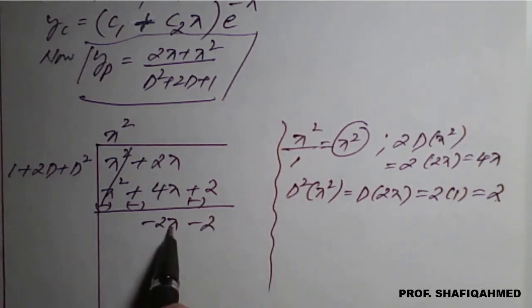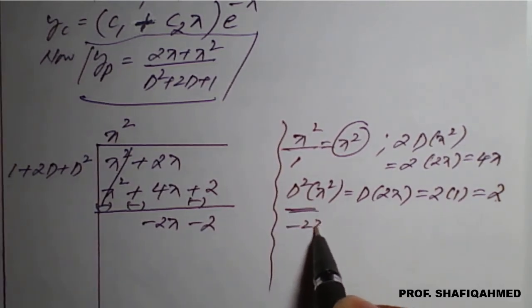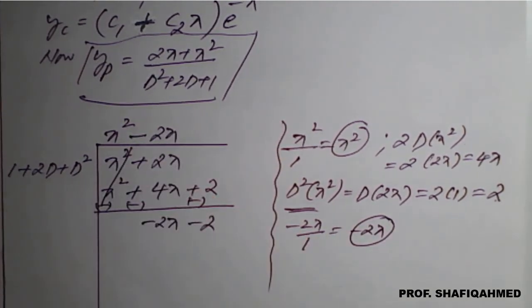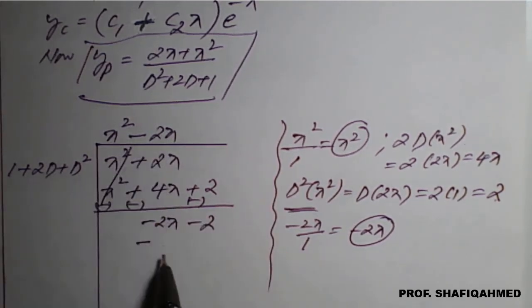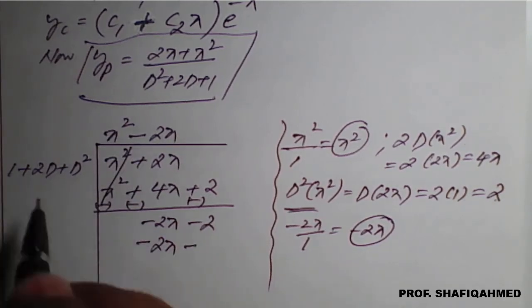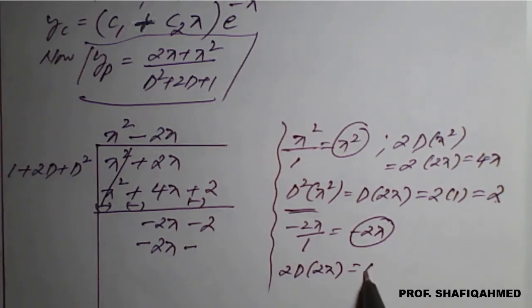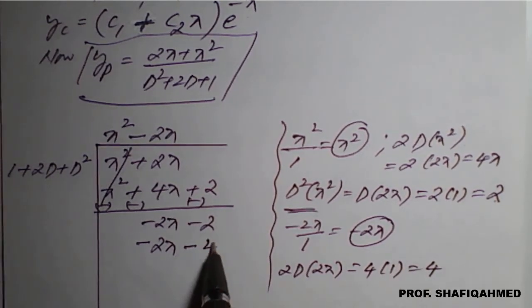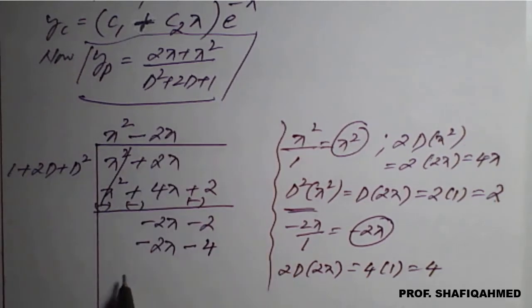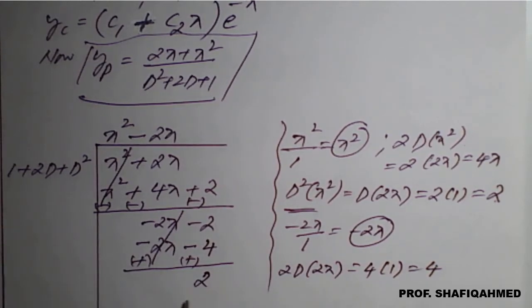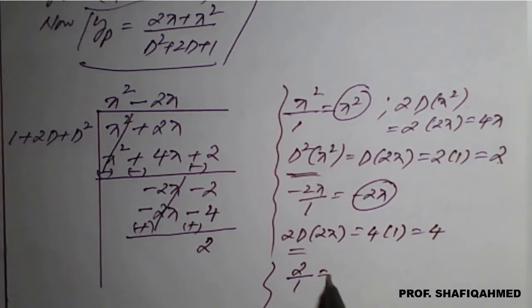The remainder minus 2x minus 2 is still a polynomial. First term divided by first term: minus 2x divided by 1 gives minus 2x — write this in the quotient. Multiply: 1 times 2x is 2x; 2D of 2x is 4; double differentiation of 2x is 0, leave it. Change the sign: minus 2x plus 2x cancels, and minus 2 plus 4 gives plus 2. So the next quotient term is 2 divided by 1, giving 2.